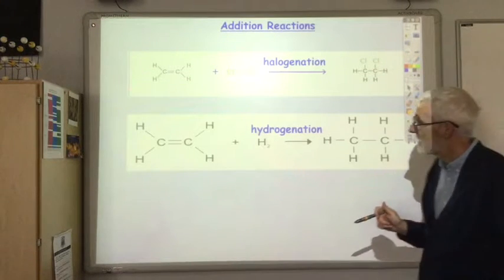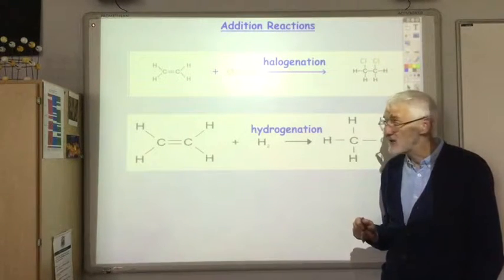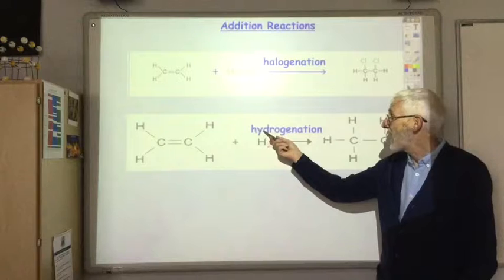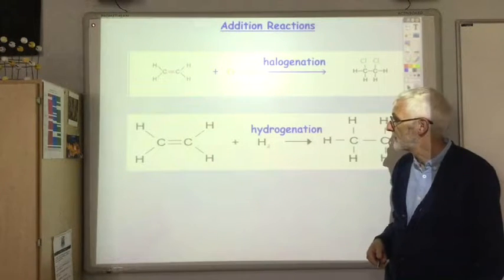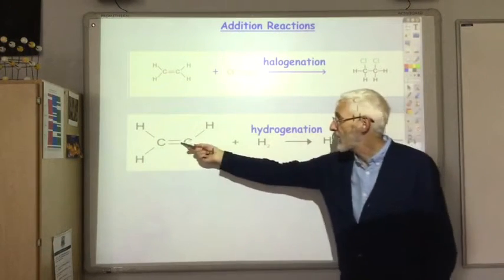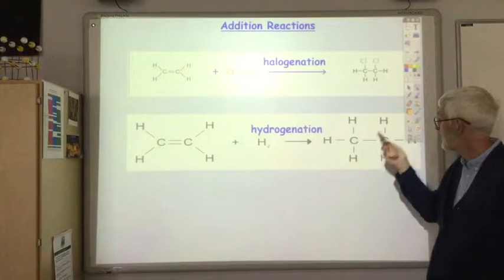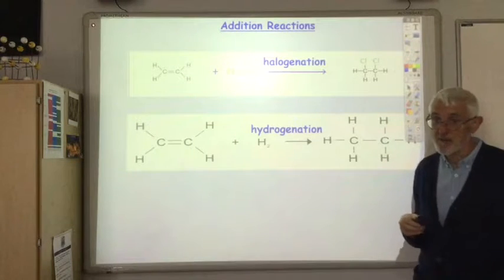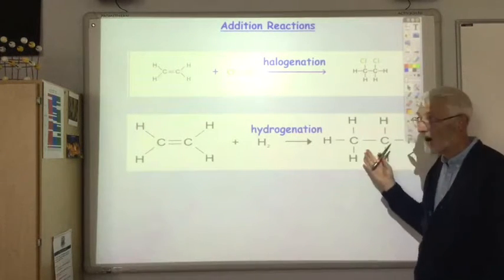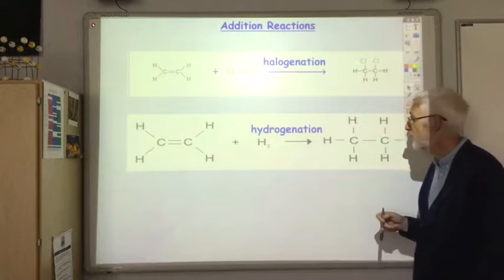We can also carry out an addition reaction by adding hydrogen. That's called hydrogenation. Again we break the carbon-carbon double bond and add hydrogen to one of the carbon atoms and hydrogen to the other carbon atom. In fact, it's an alkane we make by that process.